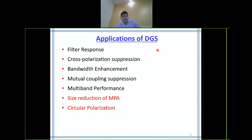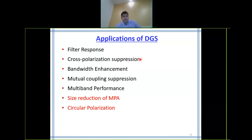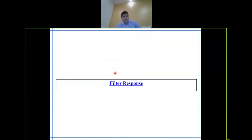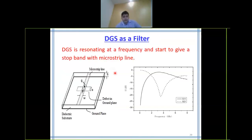Applications of DGS include: filter response, cross-polarization suppression, bandwidth enhancement, mutual coupling suppression, multi-band performance, size reduction, and circular polarization. We have already discussed how filter response is achieved — a microstrip line with a regular ground simply transmits, but adding a DGS creates a notch-band filter response.